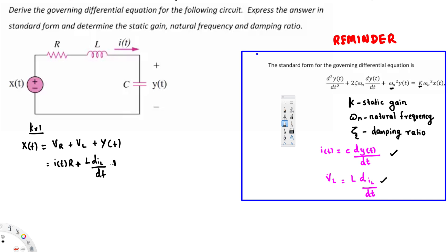We can also replace I(t) using the capacitor relation I(t) = C · dY(t)/dt. Since the resistor and inductor are in series, the current through them is the same, so I_L = I(t). Therefore dI_L can be replaced with d[C · dY(t)/dt].